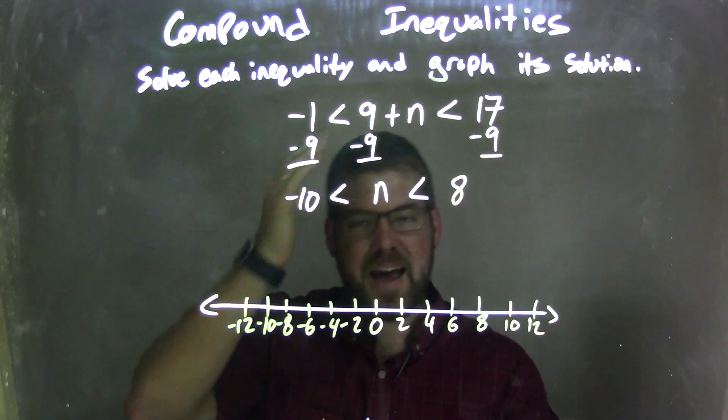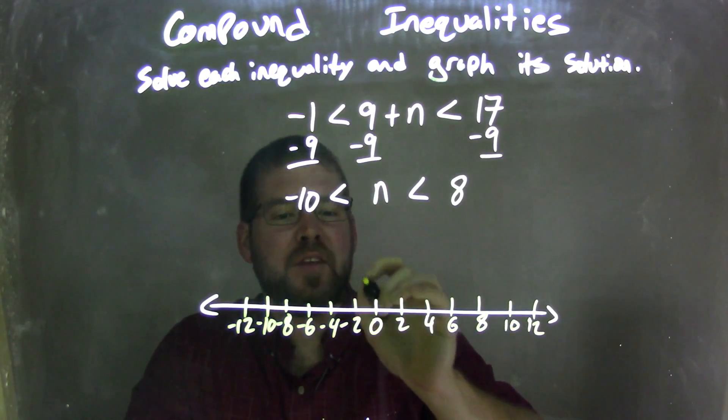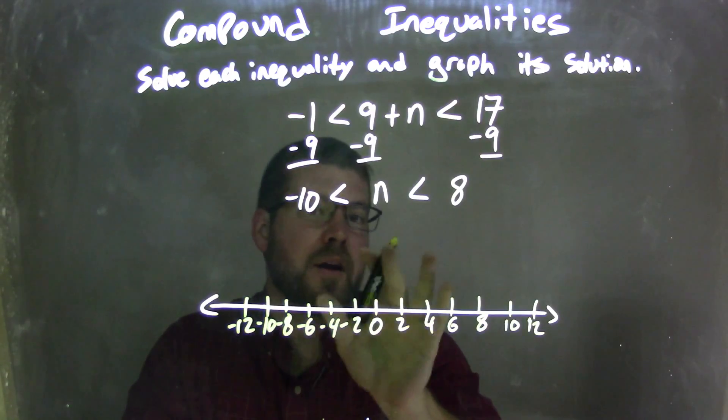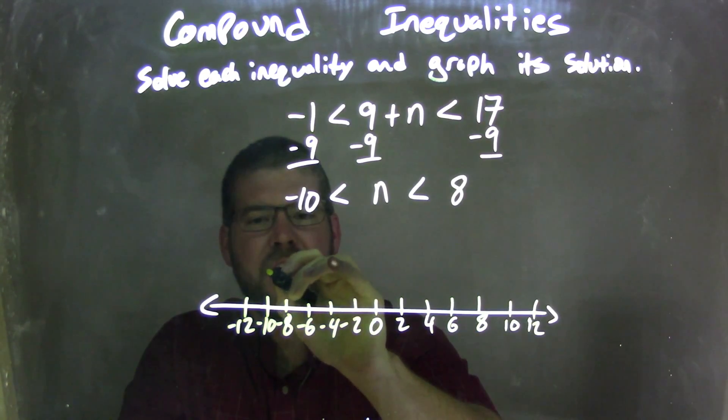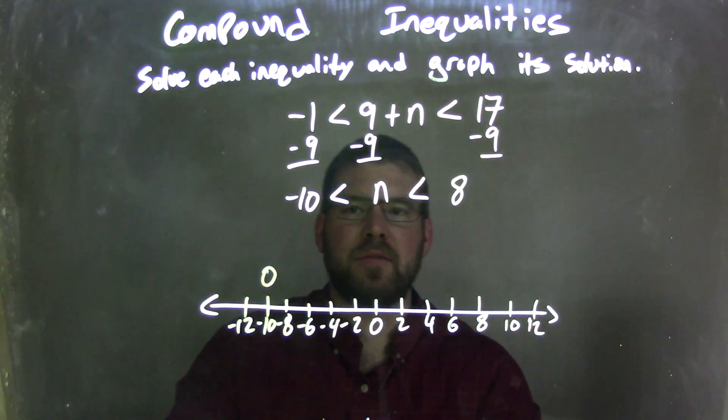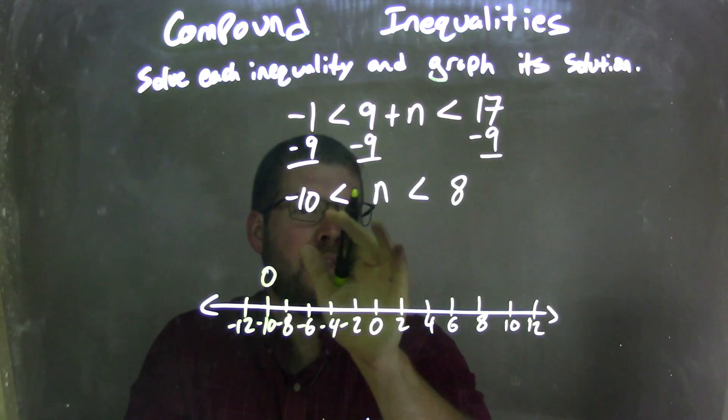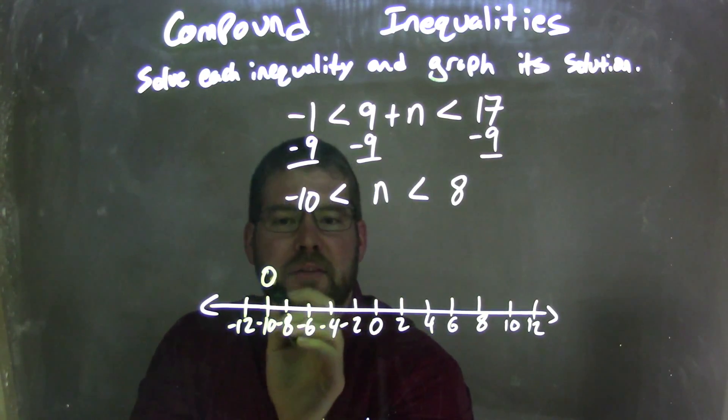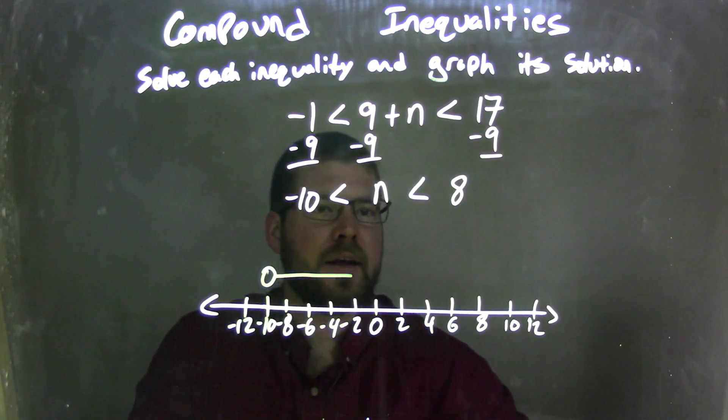Well, if negative 10 is less than n, so here's a tricky part: that means n's going to be greater than negative 10. So if negative 10 is less than n, I take negative 10 and I'm going to put an open circle there. It can't equal negative 10, but n is greater than that negative 10. Negative 10 is less than n, so n must be greater, so our arrow must be going to the right here.